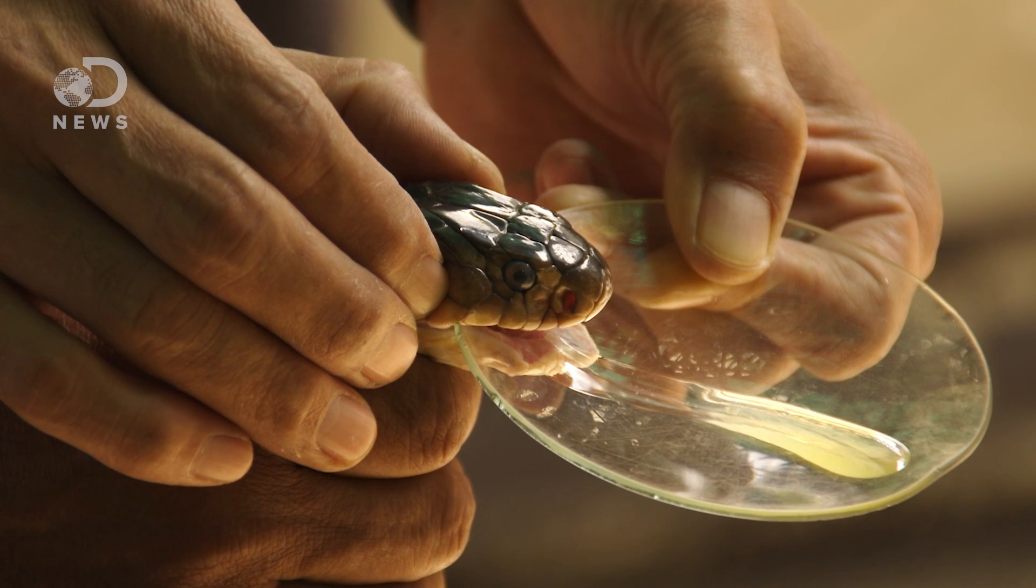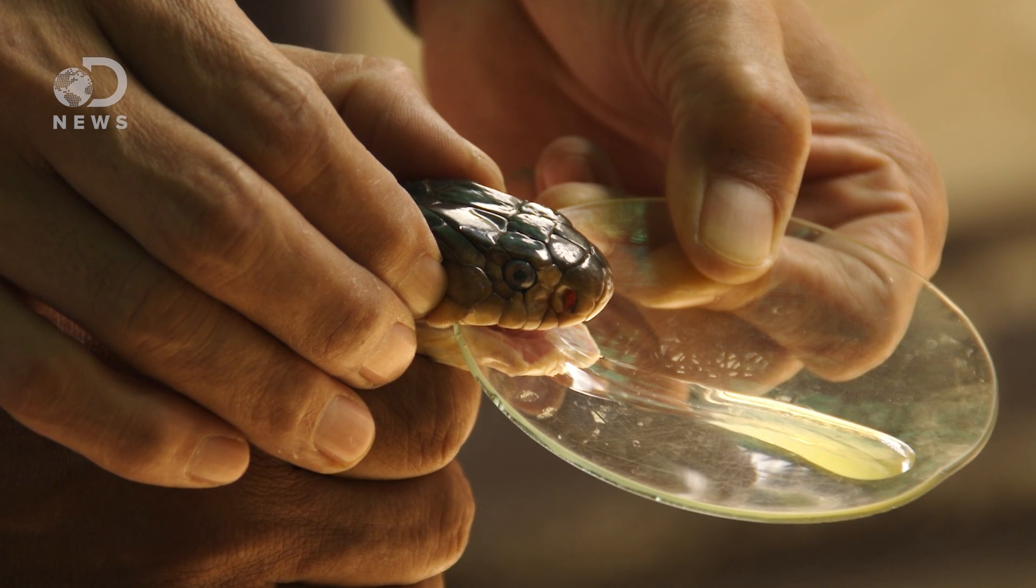It sounds simple, but it requires a lot of complicated steps. Getting snake venom requires you to actually milk the snakes, and it takes many milkings, in some cases tens of thousands, to produce even one pint of venom.